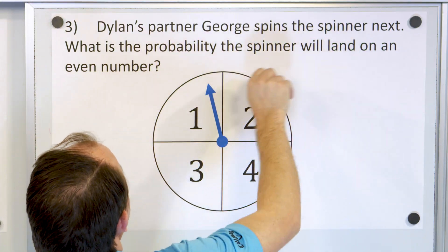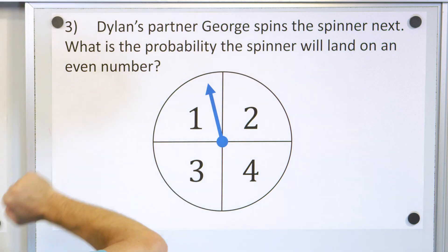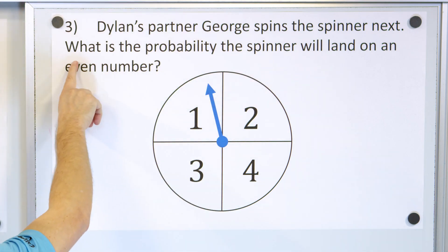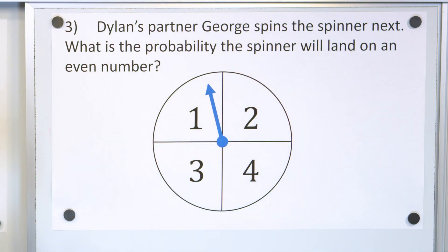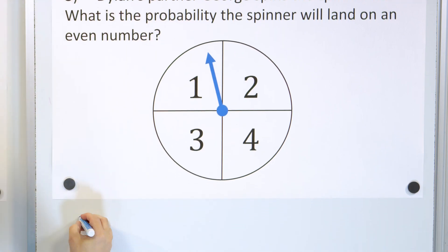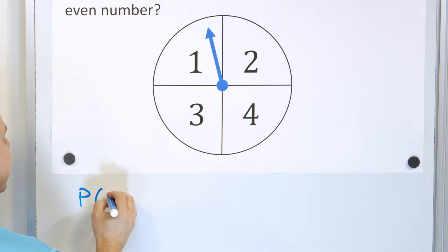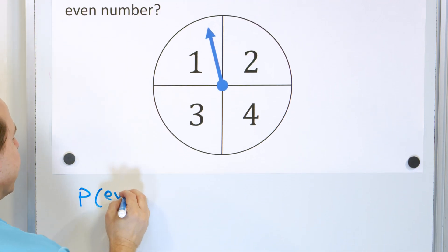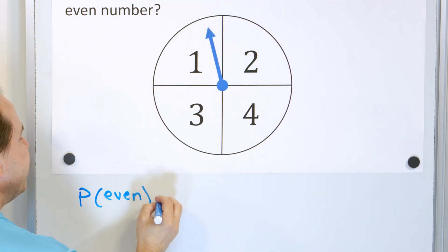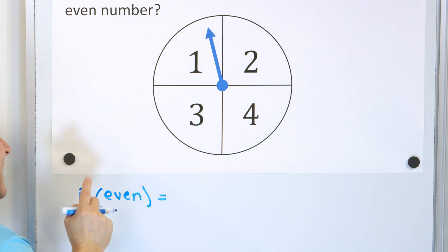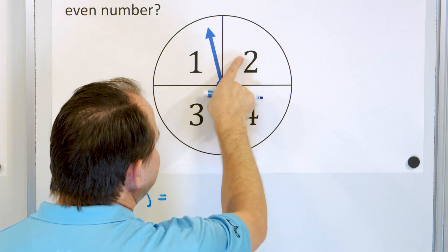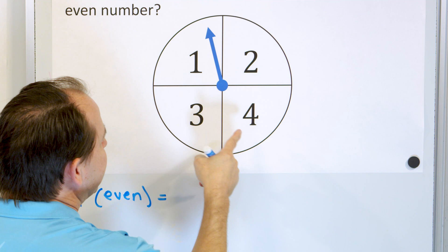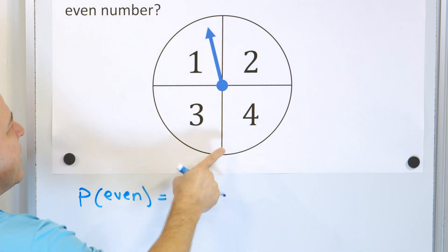George spins the spinner next. What is the probability it will land on an even number? So we want the probability of landing on an even number. The question to ask is: how many ways can I land on an even number?